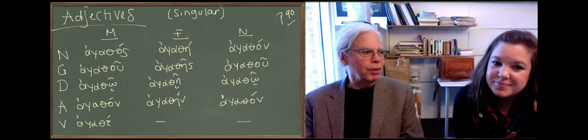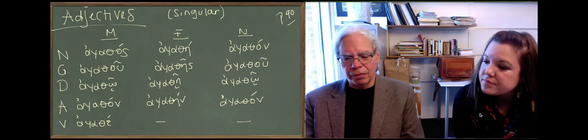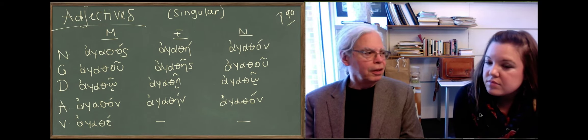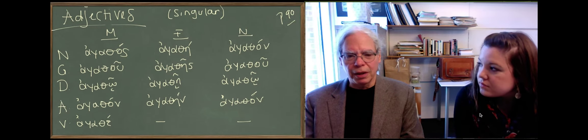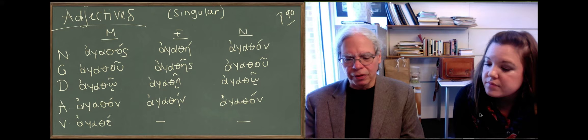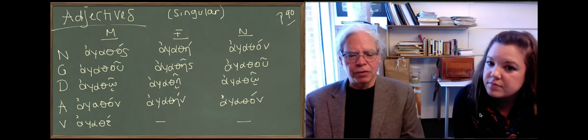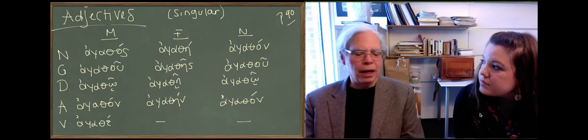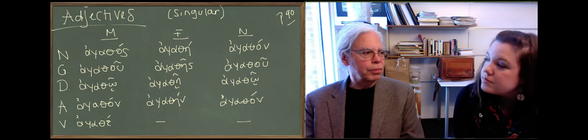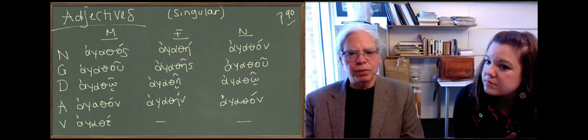So just to review the concept of an adjective, for example, the book uses the Greek word for good. There's a difference between a book and a good book. An adjective is a word like good that modifies, that is, it qualifies a noun. It restricts its function. It makes it less general and more specific.